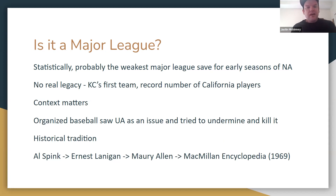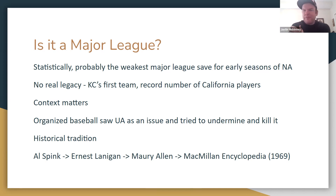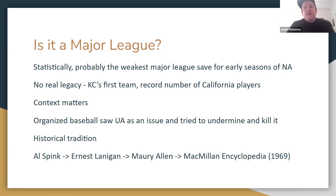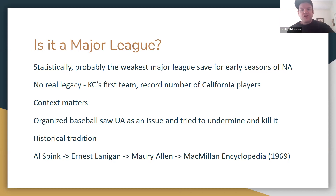The most common question about the UA is whether it qualifies as a major league. Bill James wrote a pointed essay in the 2001 Bill James Historical Abstract arguing it should not be considered one, noting that many players who had their best years in the UA were unable to play regularly in other major leagues or saw their performance drop significantly when switching. Statistically, there's a reasonable case that it's the weakest major league, save for the early seasons of the National Association.